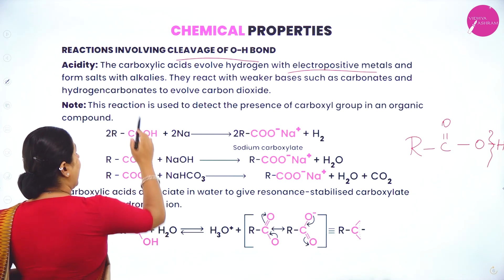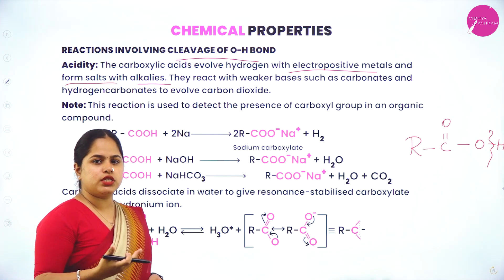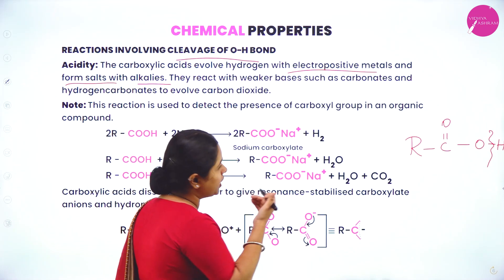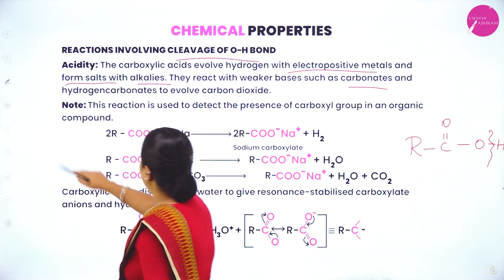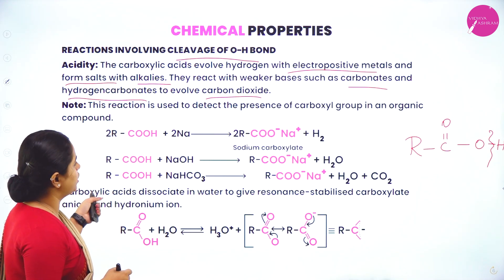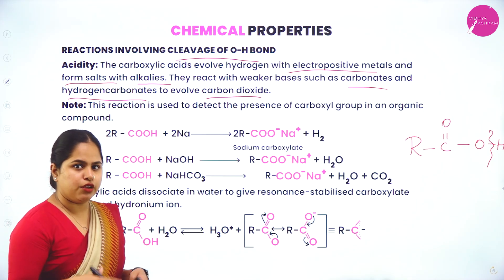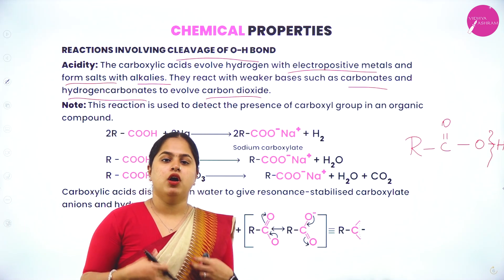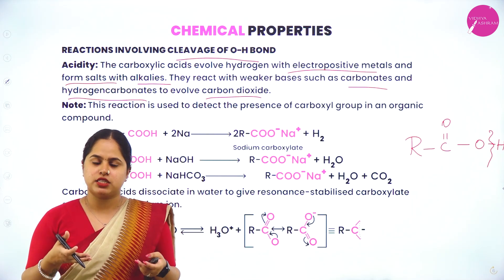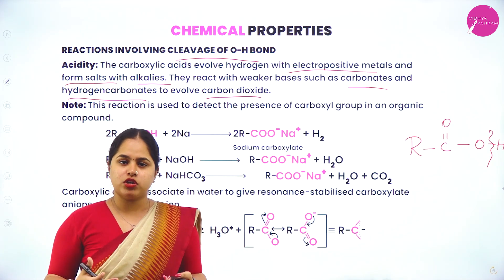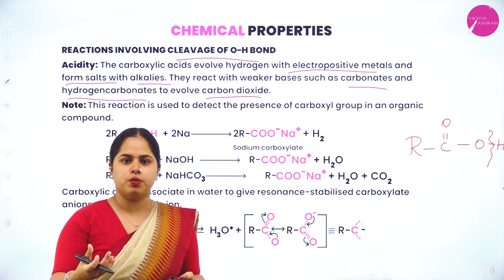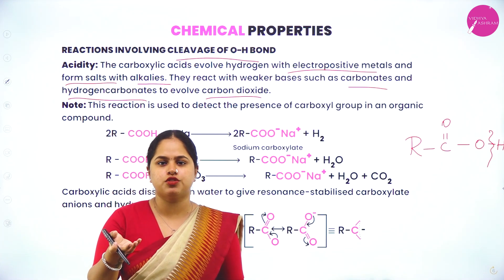When carboxylic acid reacts with alkalis like sodium hydroxide, the sodium salt of that carboxylic acid is formed. When it reacts with weaker bases like carbonates or hydrogen carbonates, carbon dioxide is evolved. This reaction is used to detect the presence of a carboxyl group in an organic compound. In lab, when the organic compound is made to react with sodium bicarbonate, carbon dioxide gas is evolved and you can see effervescence — that is how we confirm the presence of carboxylic acid.